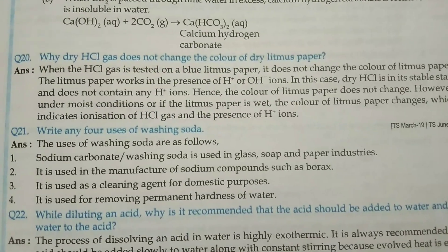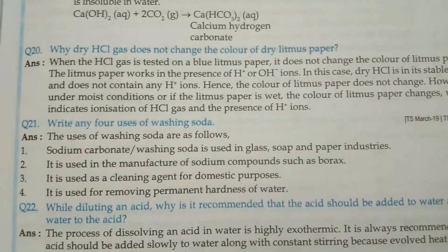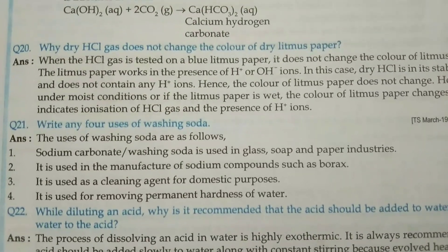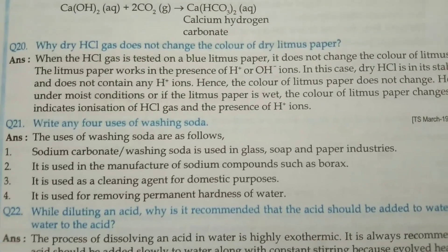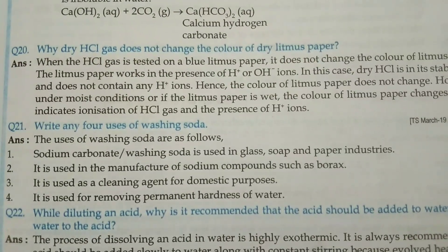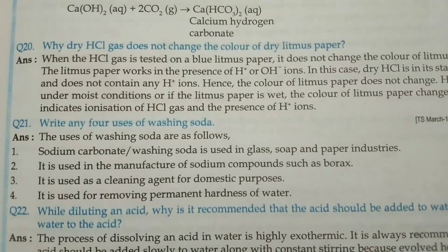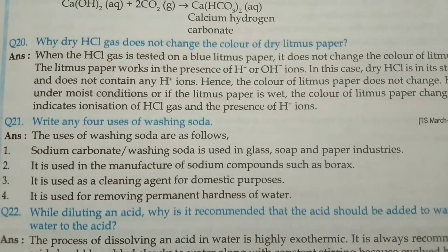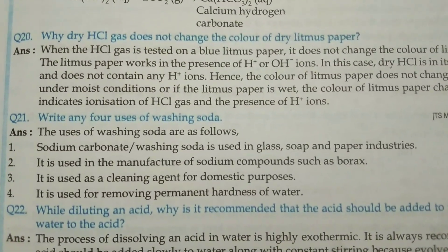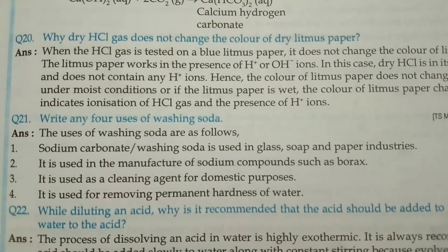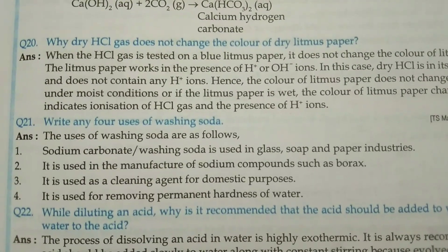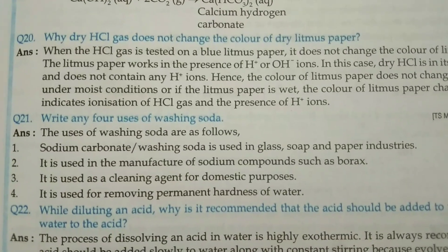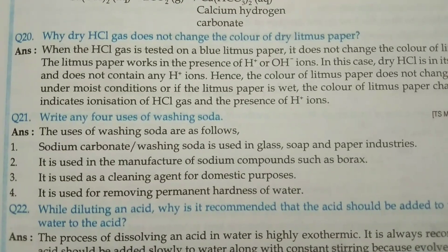One more important question: Write any four uses of washing soda. The uses of washing soda (sodium carbonate) are: It is used in glass, soap, and paper industries. It is used in the manufacture of sodium compounds such as borax. It is used as a cleaning agent for domestic purposes. It is used for removing permanent hardness of water.